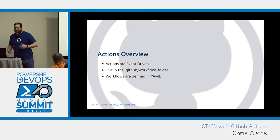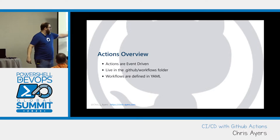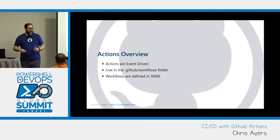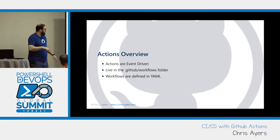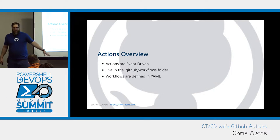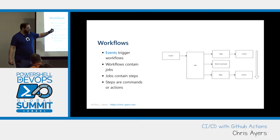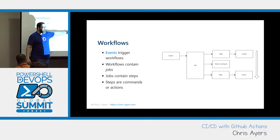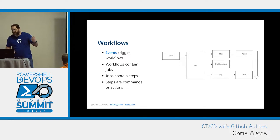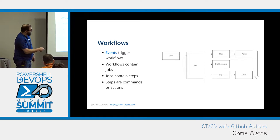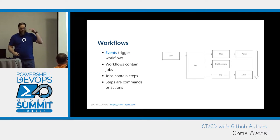Let's talk about Actions. They are event-driven — something happens, and it runs your job. They all live in the .github/workflows folder. Any repo out there, you can just go look in the .github folder, and there should be a workflows folder, and you can look in it and see all the workflows. They're all in YAML, which is why we talked about YAML. Event happens, runs a job. Jobs contain one or more steps — script actions, shell commands. These all run in order: step one, step two, step three, top to bottom in a very defined order.